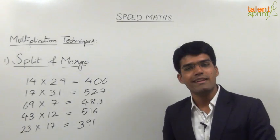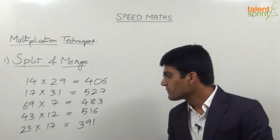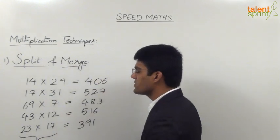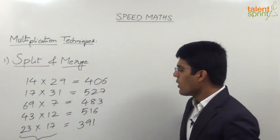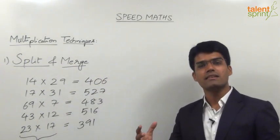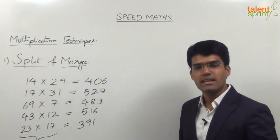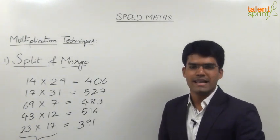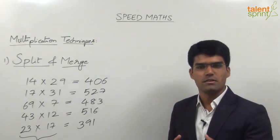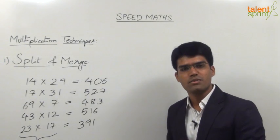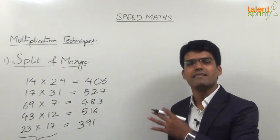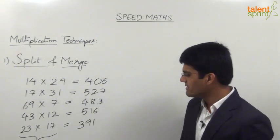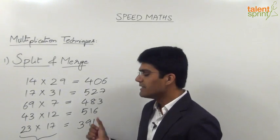Let me show you something very interesting. If you look at the last question, 23 into 17, what we have done is take 23 twenty times and then return it 3 times. We take it 20 times to get 460, then return it 3 times, that is 69. So 460 minus 69 gives us 391.